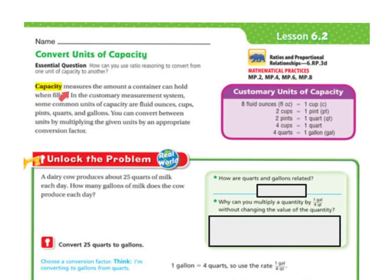Capacity measures the amount a container can hold when filled. In the customary measurement system, some common units of capacity are fluid ounces, cups, pints, quarts, and gallons. You can convert between units by multiplying the given units by the appropriate conversion factor.